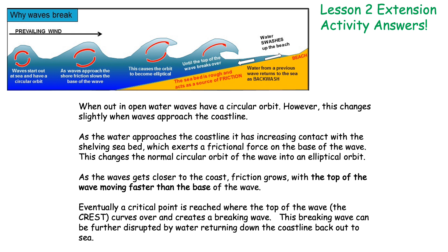So what happens to waves when they approach a shore? Waves break when they approach a shore. When out in open water, waves have this circular orbit — you can see that on the diagram by the red arrows, so they're at sea and they go around in a circle. However, when they start to approach a shore this circular orbit starts to change. As the water approaches the coastline it has an increasing contact with the shelving seabed. The seabed is not all the same level; the water will get shallower as you approach the coastline, and as the waves approach the coastline there is a frictional force on the base of the wave. At the bottom of the wave there's a buildup of friction between the wave and the seabed. This changes the normal circular orbit and creates an elliptical orbit, which you can see in the middle of the diagram.